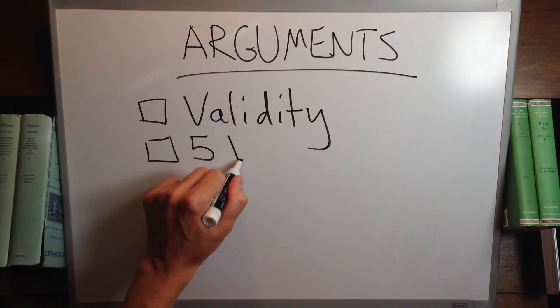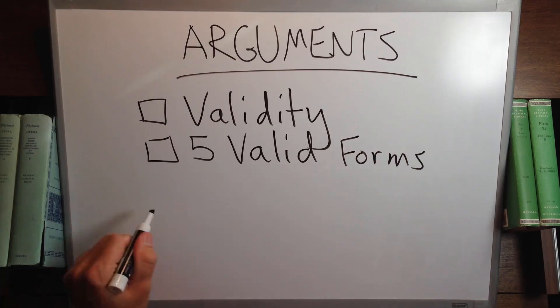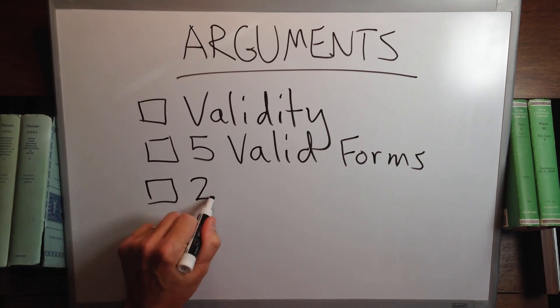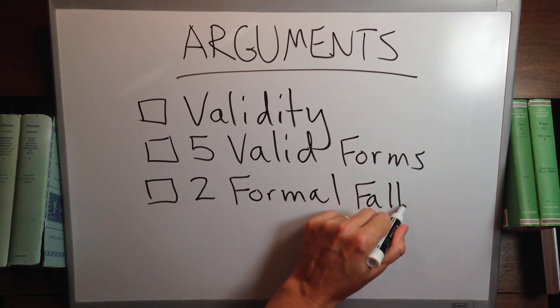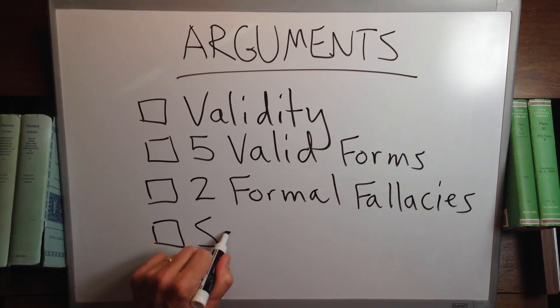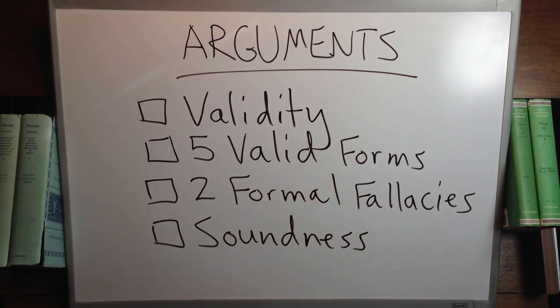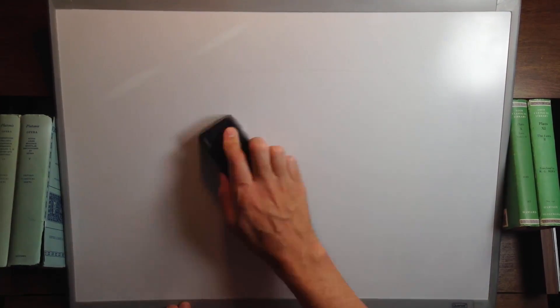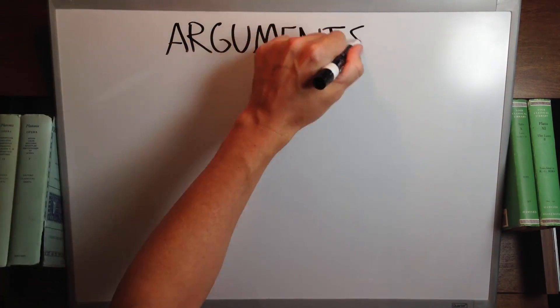I'm going to talk about several topics regarding arguments: validity — what it is — five valid forms of arguments, two formal fallacies, and how soundness differs from validity.